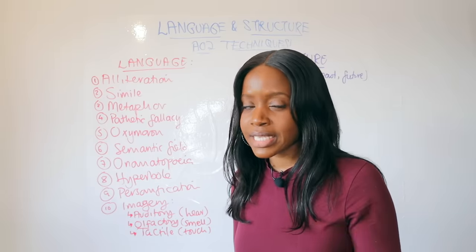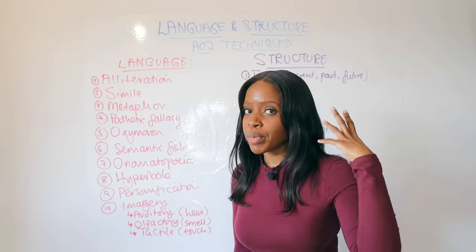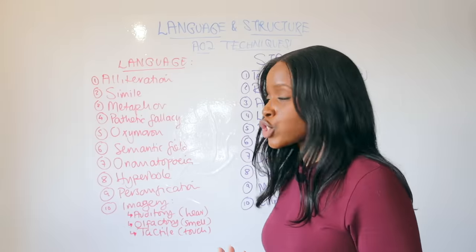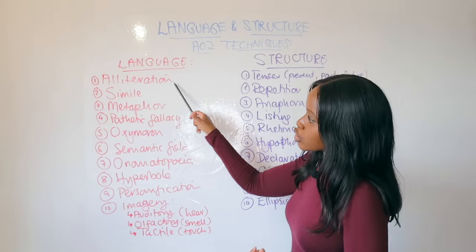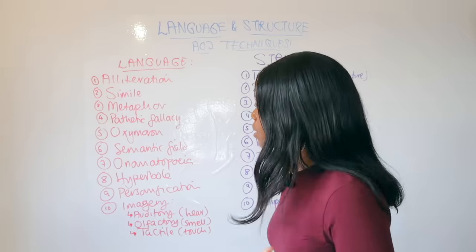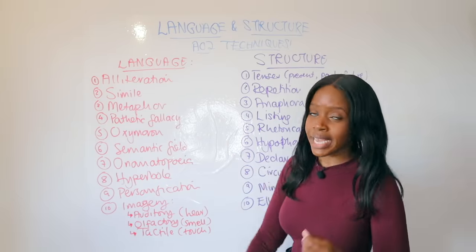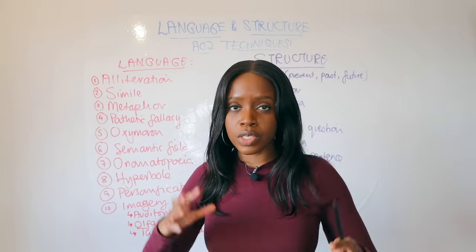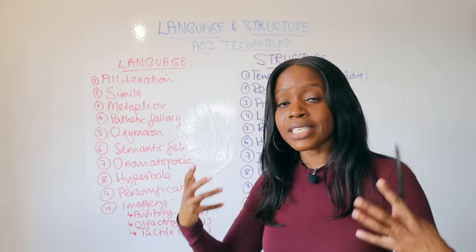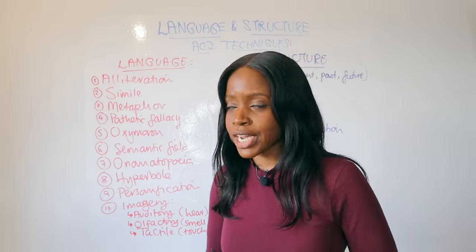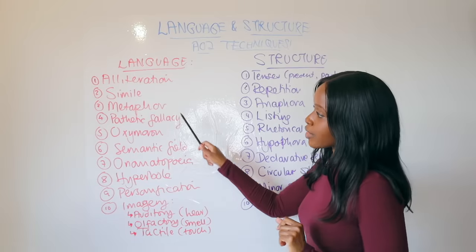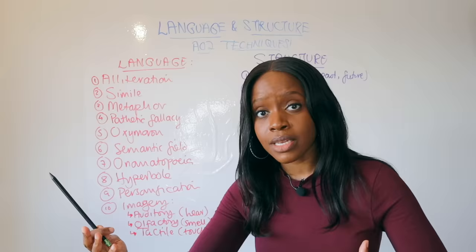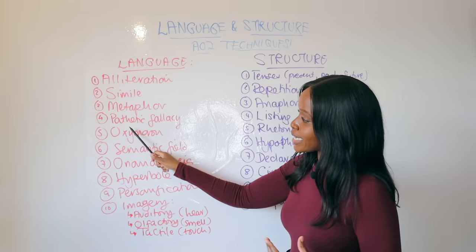Let's begin by looking at the top 10 language techniques you'll find in any extract. If you get stuck, just remember these techniques and look for them as you're reading. Starting off: alliteration — this is when two or more words start with the same letter. The second technique is simile, a very popular language technique where the writer compares two things using 'like' or 'as'. The third technique is metaphor — this is when they describe something as if it were something else.